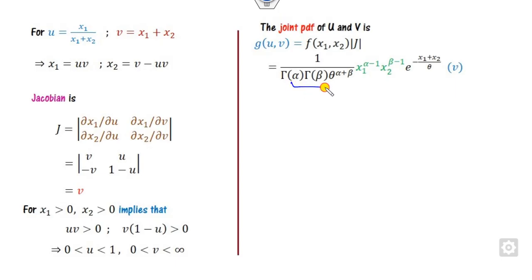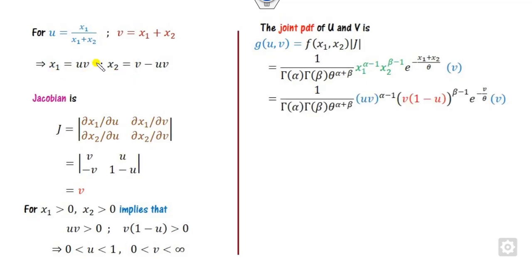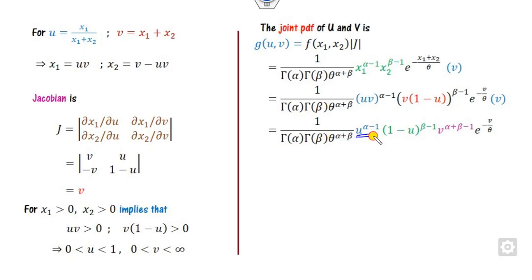Now you can substitute all the values. This is the Jacobian, and f(x1, x2) is given here. Substituting the values of x1 and x2 using these expressions, we get the joint density function in terms of u and v. We can then collect the terms involving u separately and the terms involving v separately.